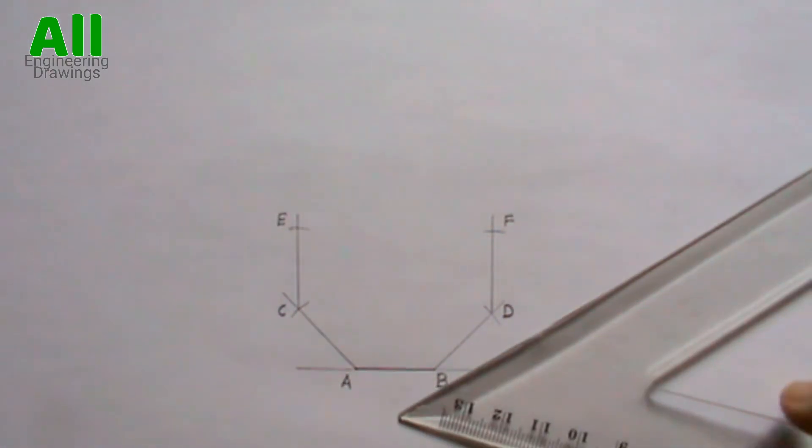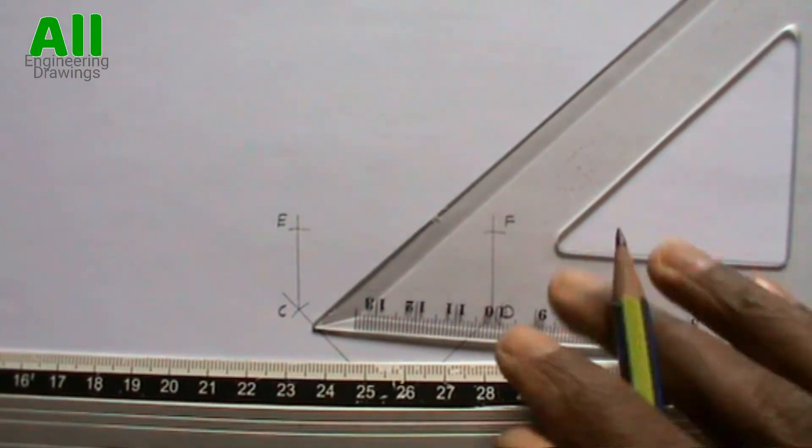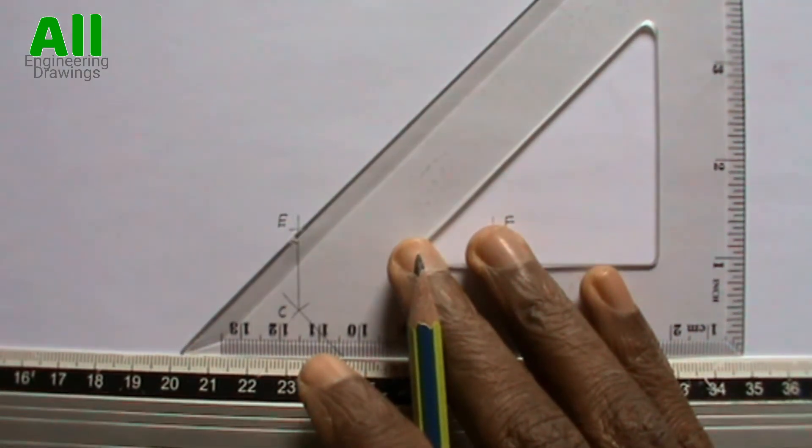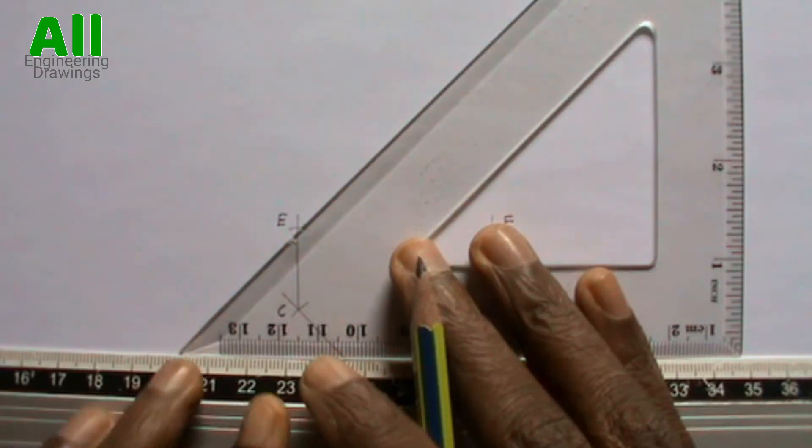Now using your 45 degree set square draw lines from points E and F inclined to the horizontal at 45 degrees.